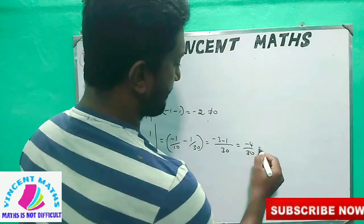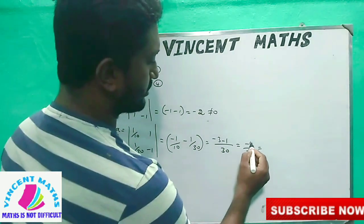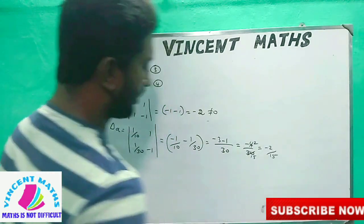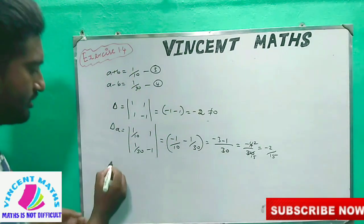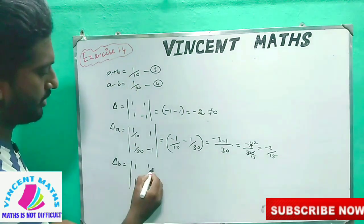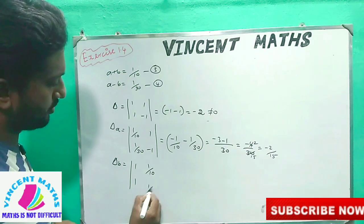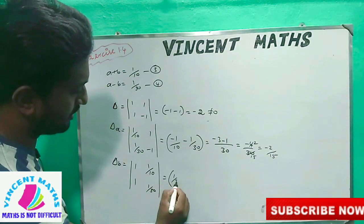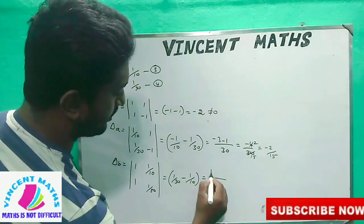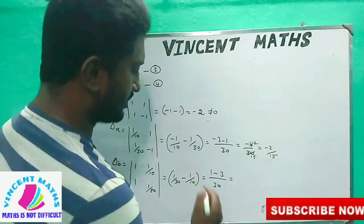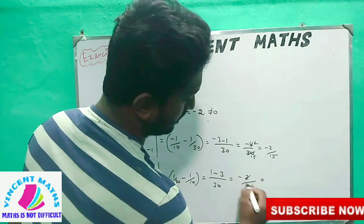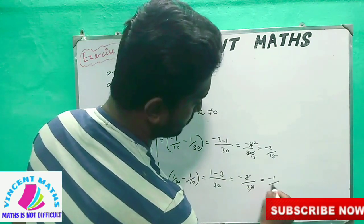If we simplify, we divide to get minus 2 by 15. So del A equals minus 2 by 15. Now if we look at del B: 1 by 30 minus 1 by 10. LCM is 30, giving 1 minus 3, which means minus 2 by 30. If we divide, that gives minus 1 by 15. So del B value is minus 1 by 15.